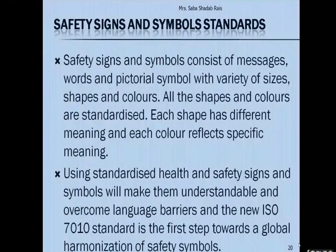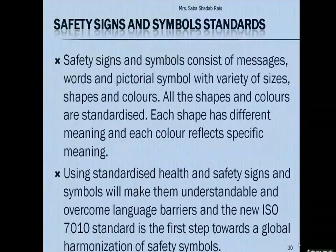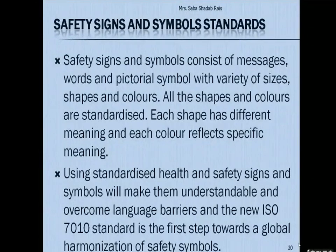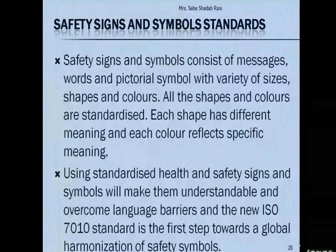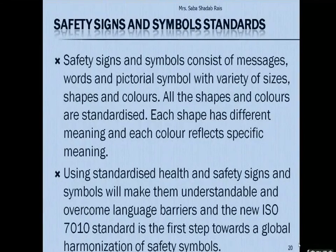When you were small you might have observed that your teacher used to check your books with a red pen to mark your mistakes. So the red color circle indicates something is wrong. This shows that all shapes and colors are standardized — each shape has a different meaning and each color reflects a specific meaning.